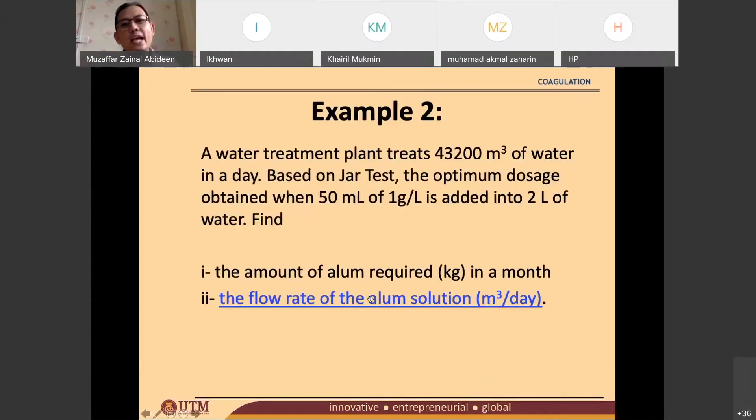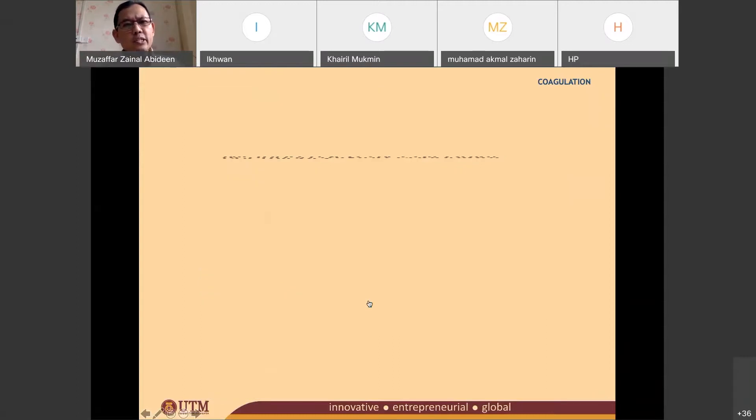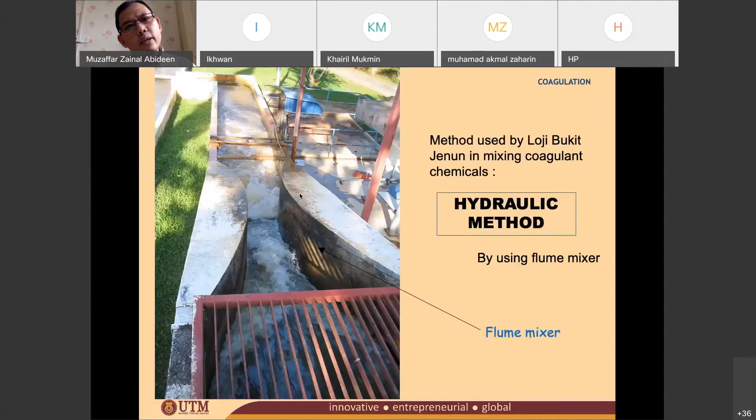All right, the flow rate of the alum solution - what do they mean by that? Perhaps if you look at these pictures, this is what they mean. The flow rate of the alum solution, the flow rate in the perforated pipe. So what is the flow rate?